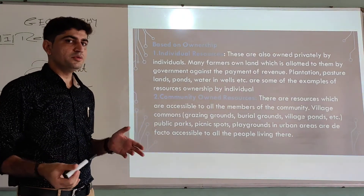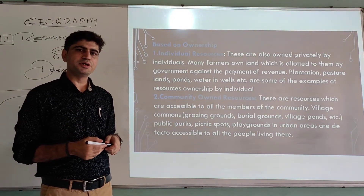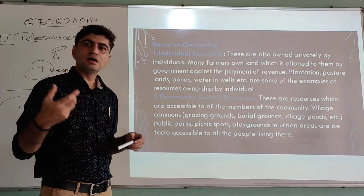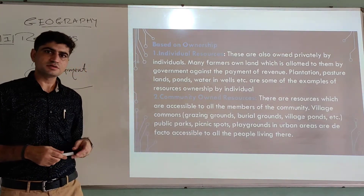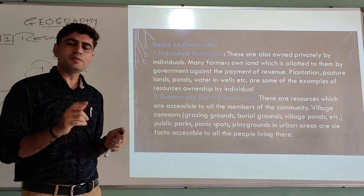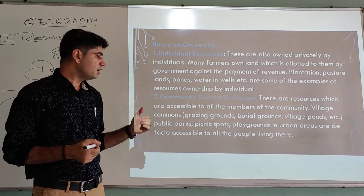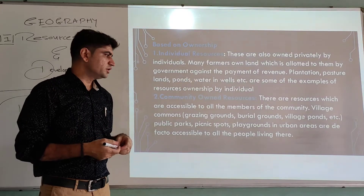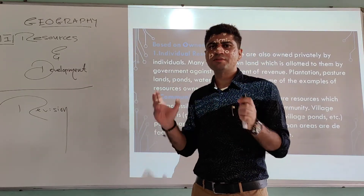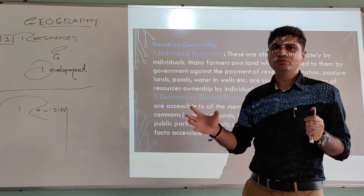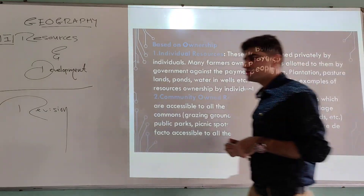Community owned resources are those accessible to all members of a community — a group of people. Examples include a playground in a village, a public garden in a city, burial grounds, village grazing grounds, public parks, and picnic spots. A cemetery of a village or urban area is limited to the people who reside in that particular area — these are community owned resources.